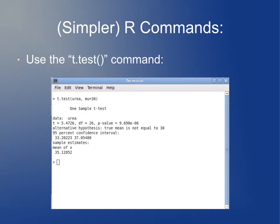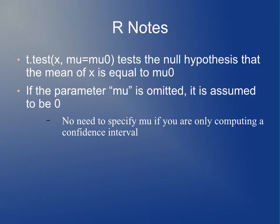In practice, you'll want to use the t.test command, which avoids the extra steps from the previous slide. You say t.test(urea, mu = 30) and get the same p-value. In general, t.test(x, mu = mu0) tests the null hypothesis that the mean of x equals mu0. If you don't include the parameter mu, it's assumed to be zero. You don't have to specify mu if you're just using t.test to compute a confidence interval, because you're not doing a hypothesis test in that case — the confidence interval values are the same for any value of mu0.